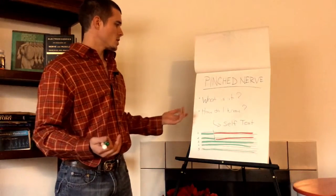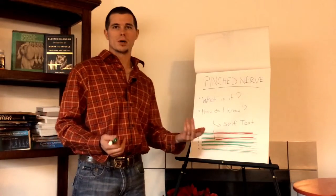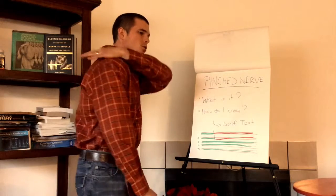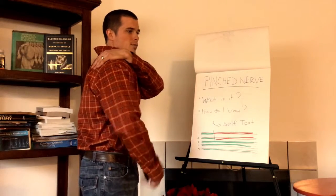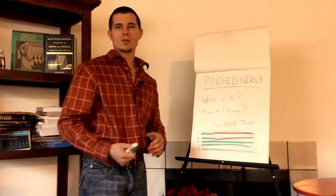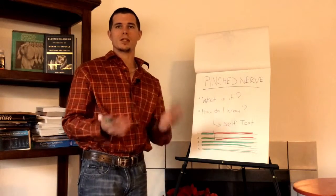So that's what a pinched nerve is and how do I know if I have it? Well people who have pinched nerves have symptoms often in the neck but they also have symptoms or pain or burning in the shoulder blade and they have symptoms that travel down the arm and sometimes even into the hand.